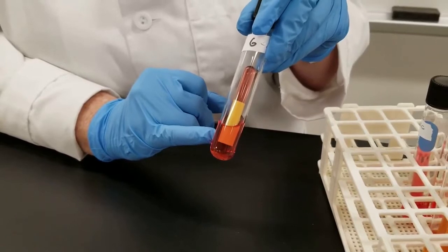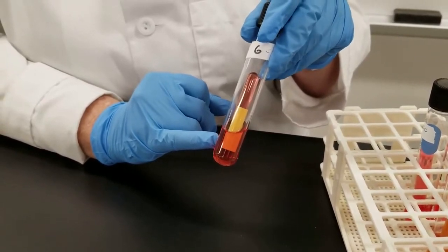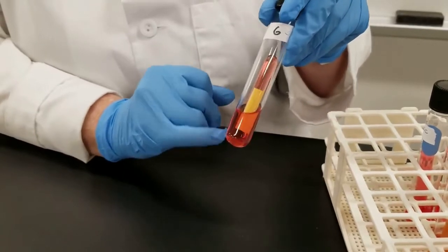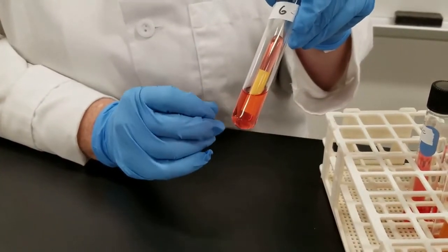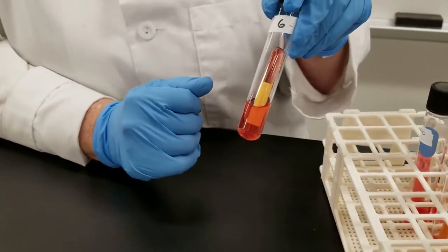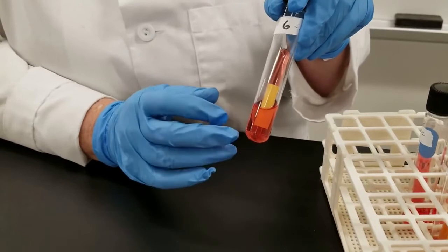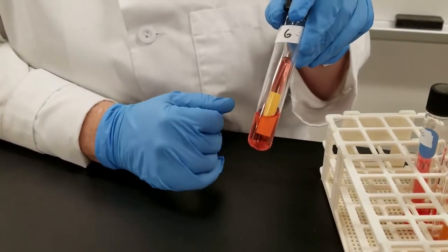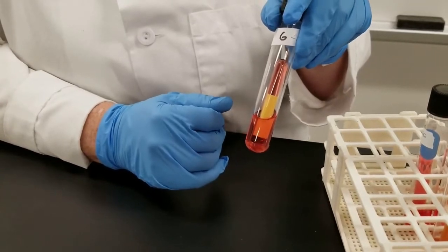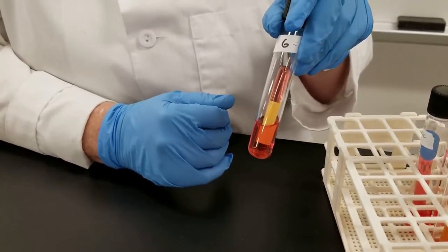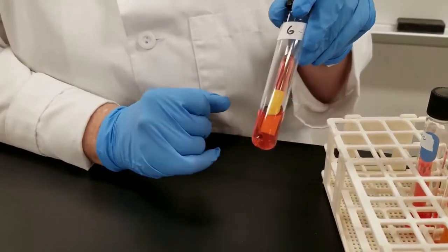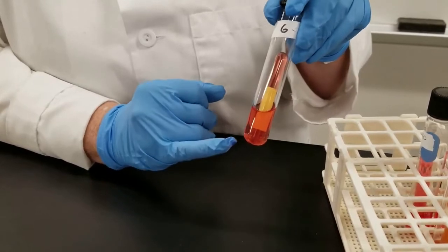This has the phenol red pH indicator added to it. So at neutral pH it has this kind of orangish red color. Some organisms as they break down the sugars, the byproduct is going to be acid and that's where the pH indicator plays a role. Visually we'll be able to look at it. When the pH drops to a more acidic or low pH it turns yellow. And so for some organisms when we come back and look at this after it's incubated, it will be yellow.